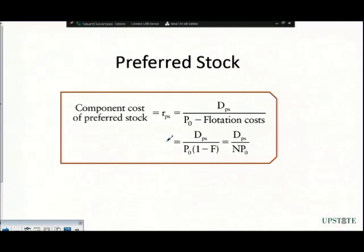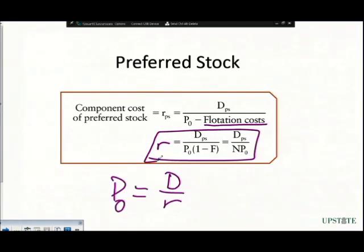We have typically valued common stock as P0 equals D divided by R. But in this case, we add in flotation costs because if we're going to issue preferred stock, we have to account for flotation costs. When we substitute and solve all this around, that comes us down to this formula right down here.